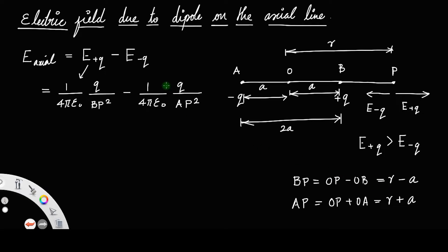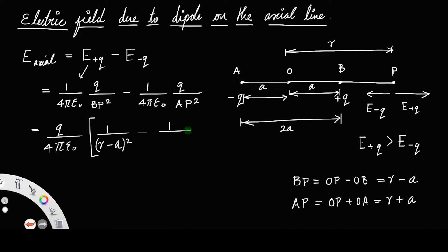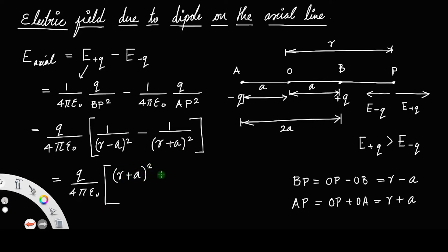We can take the factor q/(4πε₀) outside since it is common, giving E_axial = (q/4πε₀) · [1/(r−a)² − 1/(r+a)²]. Cross-multiplying, this becomes (q/4πε₀) · [(r+a)² − (r−a)²] / [(r−a)²(r+a)²].